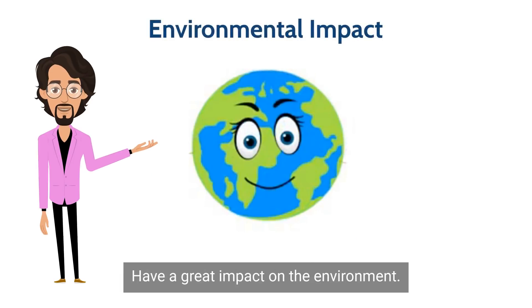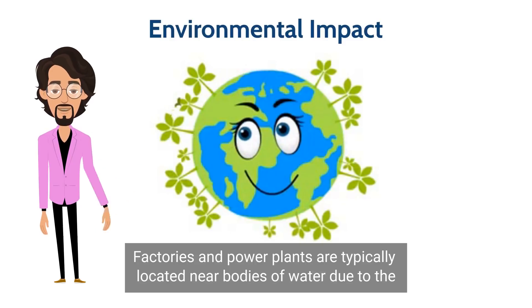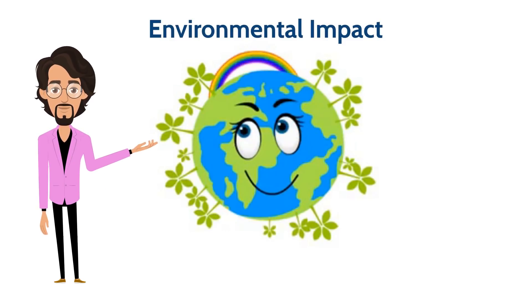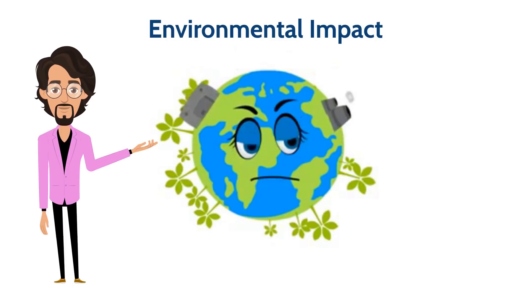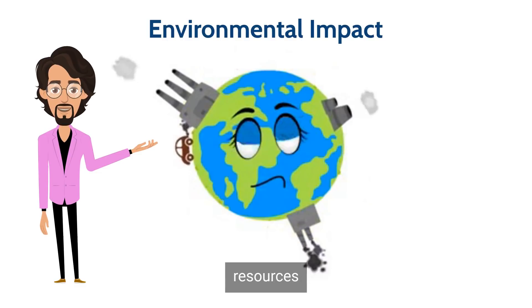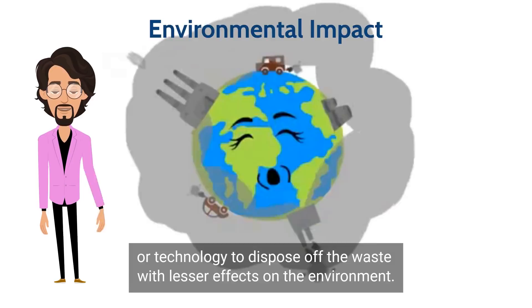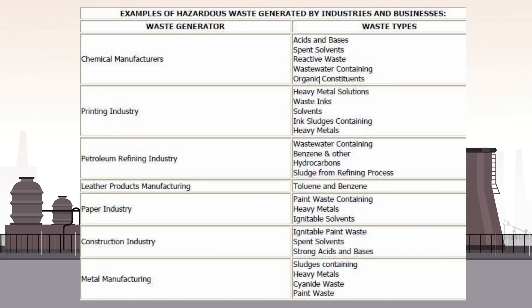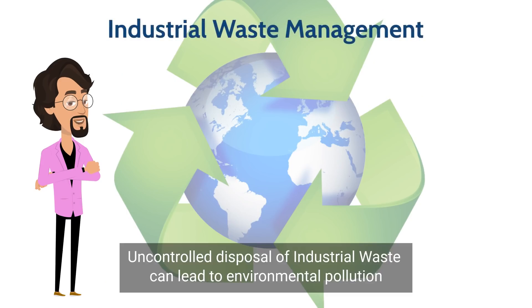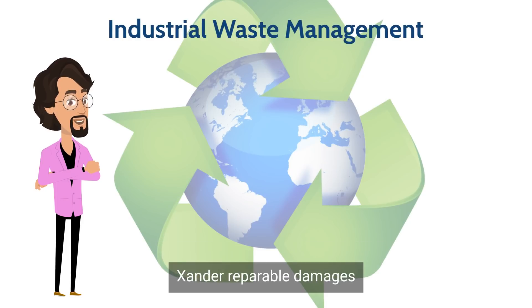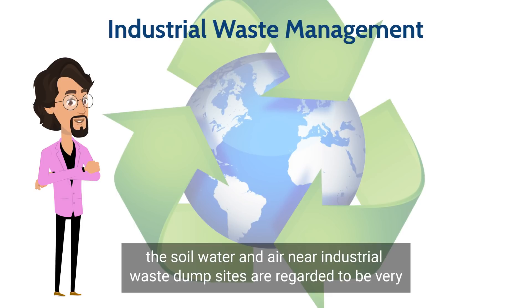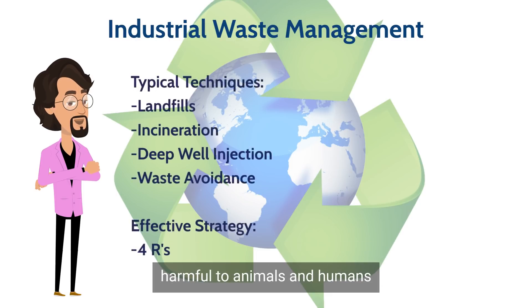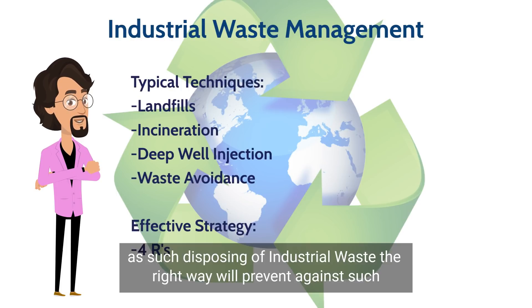These industrial wastes have a great impact on the environment. Factories and power plants are typically located near bodies of water due to the need for large amounts of water as an input to the manufacturing process. Many areas that are becoming industrialized do not yet have the resources or technology to dispose of the waste with lesser effects on the environment. They cause land, air, and water pollution. Uncontrolled disposal of industrial waste can lead to environmental pollution and irreparable damages. The soil, water, and air near industrial waste dump sites are regarded to be very harmful to animals and humans. Disposing of industrial waste the right way will prevent against such occurrences.